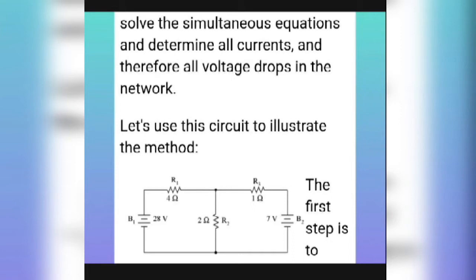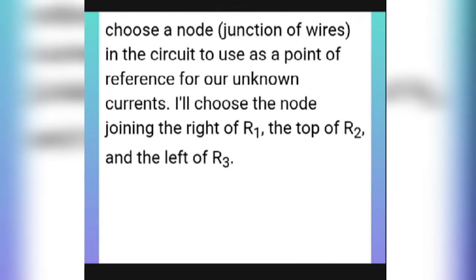The first step is to start at a node. We note that the positive point is connected to positive and the negative point to negative of B2. Choose a node — a junction of wires in the circuit — to use as a reference point for our unknown currents. I will choose the node joining the right of R1, the top of R2, and the left of R3.